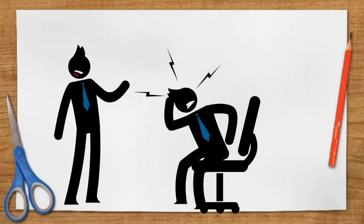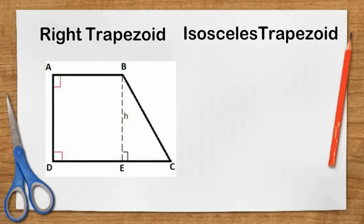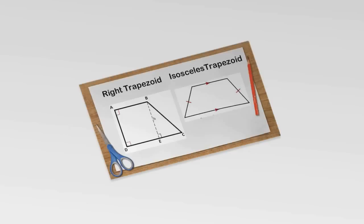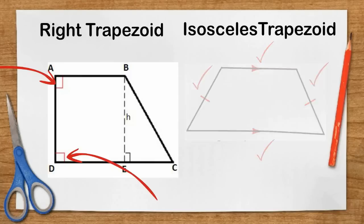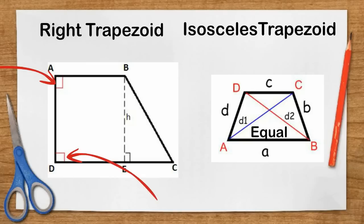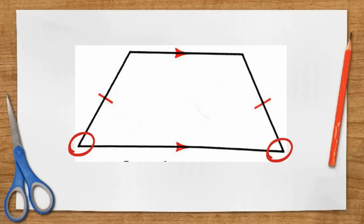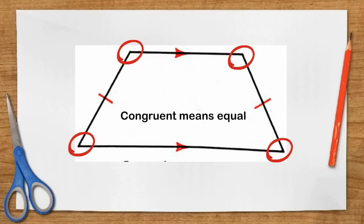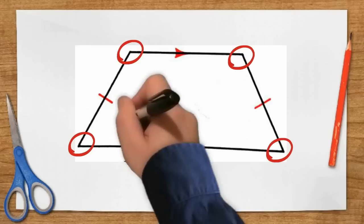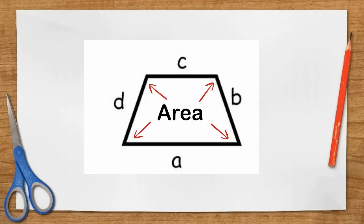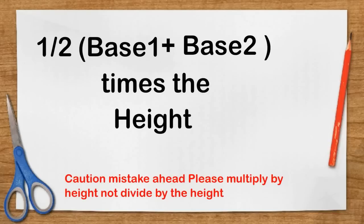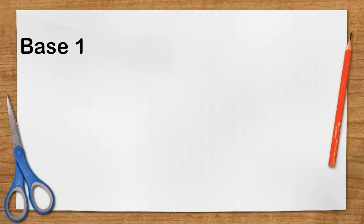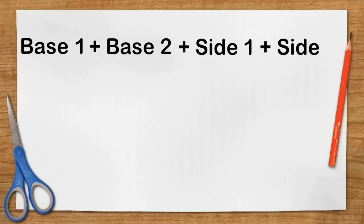In addition, there are also right trapezoids and isosceles trapezoids. A right trapezoid has a right angle. An isosceles trapezoid is a trapezoid with two parallel sides and the other two sides are congruent. The diagonals of an isosceles trapezoid are also congruent, and the base angles of an isosceles trapezoid are congruent. The formula for finding the area of a trapezoid is one half times (base 1 plus base 2) times the height. The perimeter is base 1 plus base 2 plus side 1 plus side 2.